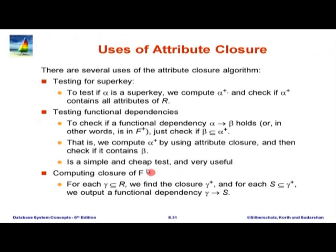We can also use attribute closure to compute F+. Basically, we take every subset of R, and for every such subset we compute gamma+ (the attribute closure). For every S subset of or equal to gamma+, we output a functional dependency gamma goes to S. That is the closure. Computing all of F+ has huge redundancy, so we really do not want algorithms in practice that compute all of F+; it is very expensive.